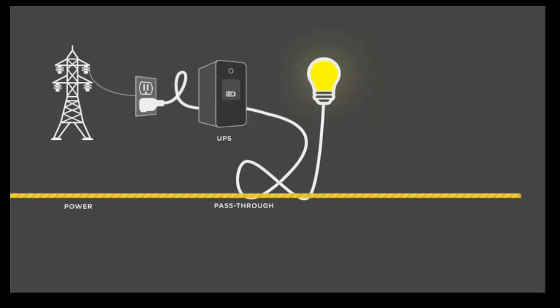During normal operation, a UPS also protects equipment against sudden power surges or spikes. When utility power fails or is switched off, the UPS switches to battery power instantly. The equipment keeps working.